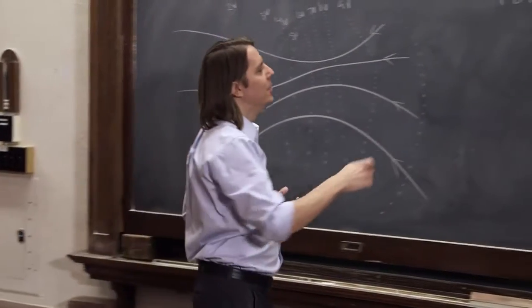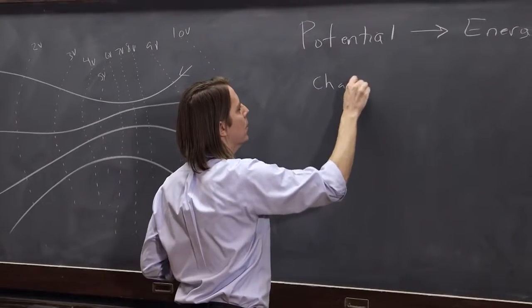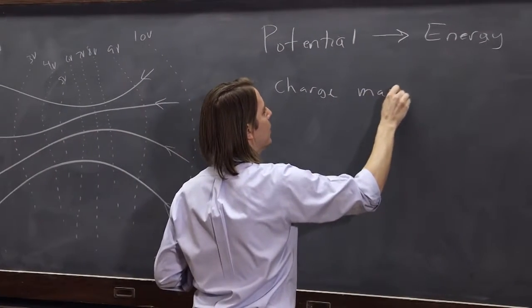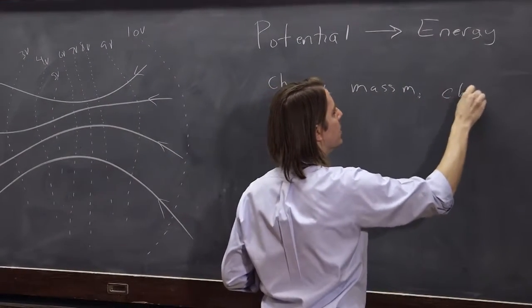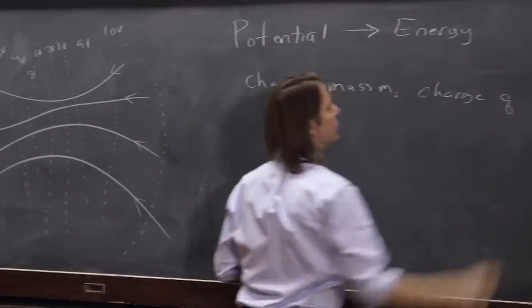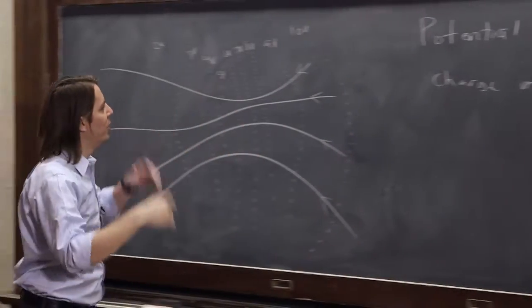So let's imagine a charge of mass m and charge—that's kind of redundant—charge q, goes from point A to point B. Let's say it goes from here.